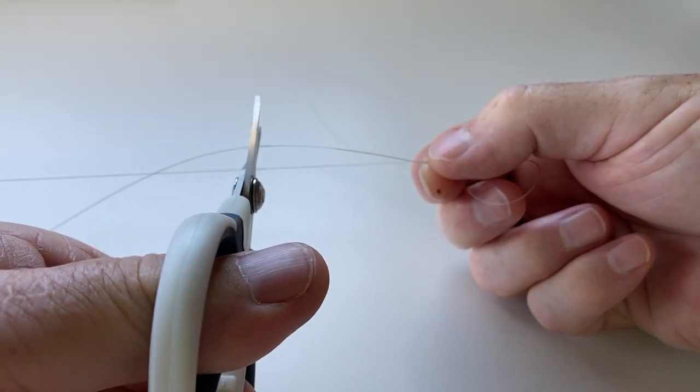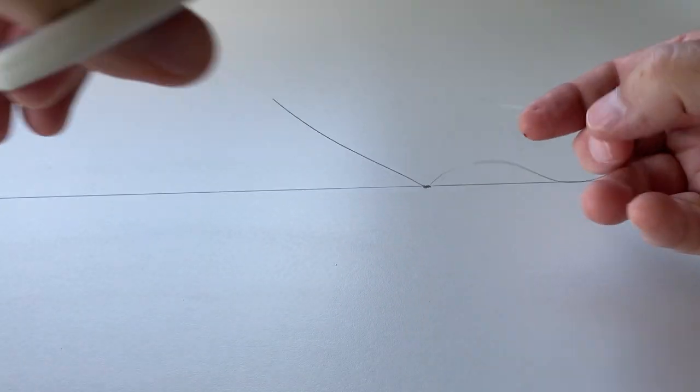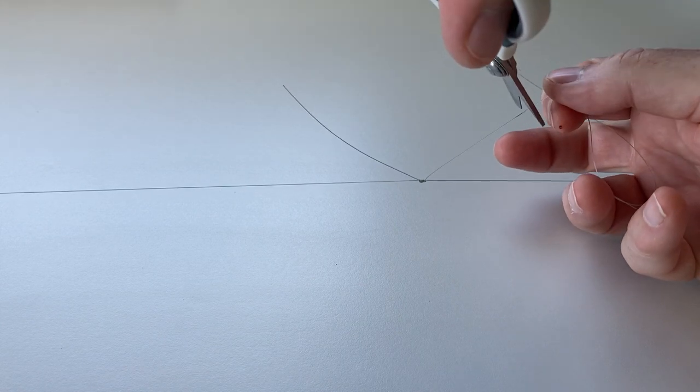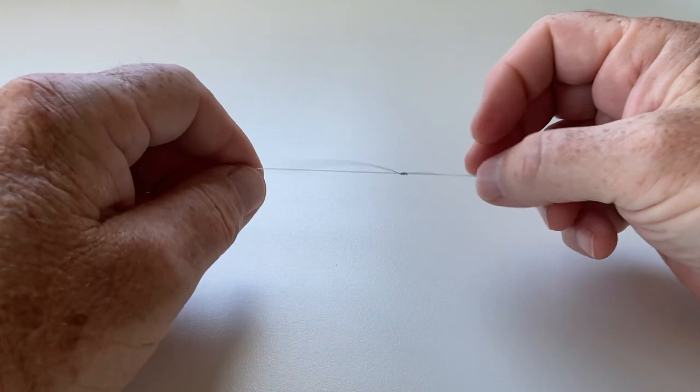So just test to make sure it moves. Cut off about 50 millimeters of line from each of the tag ends and that's your knot complete.